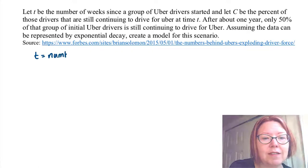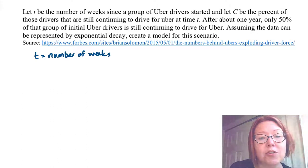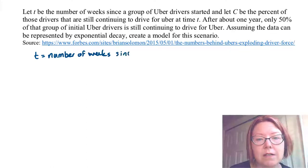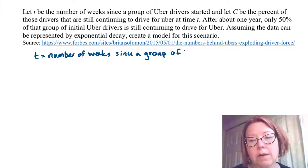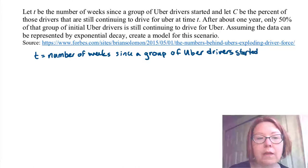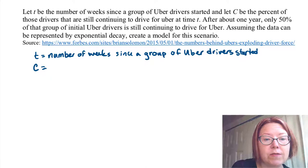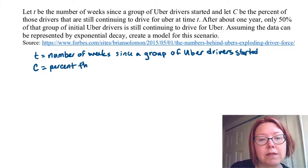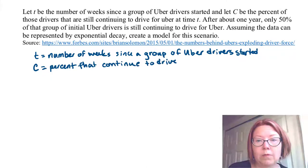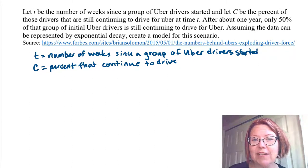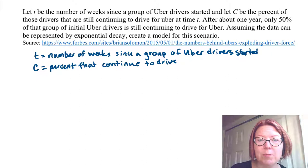So t is the number of weeks — and that's unusual, we often work in years — since a group of Uber drivers started. Capital C is the percent of those drivers continuing to drive. So at the beginning we would have 100% driving, and after a year only 50% of that initial group of Uber drivers is still continuing to drive.